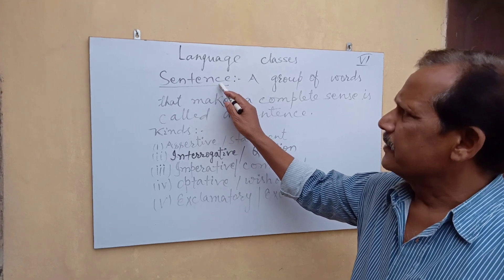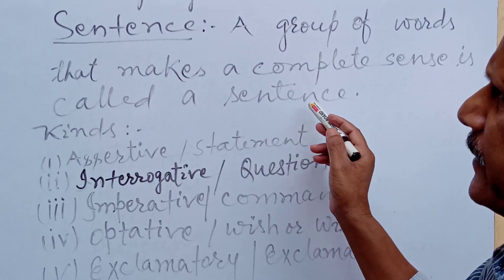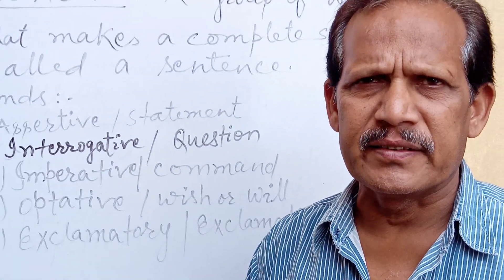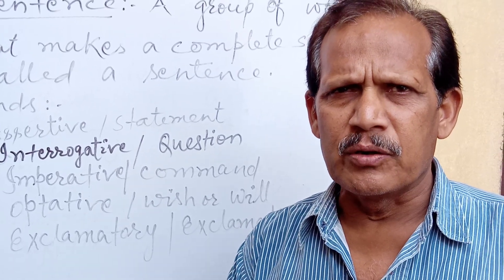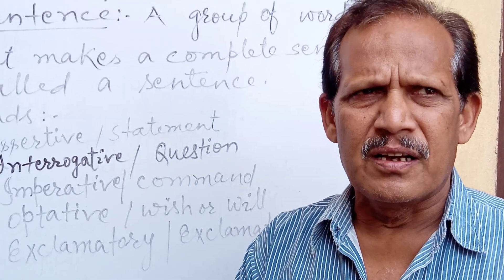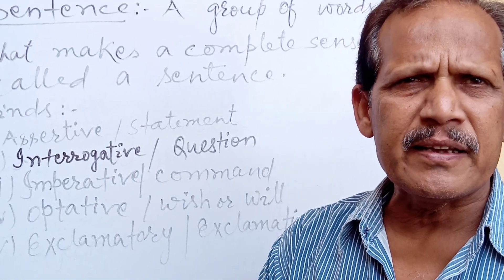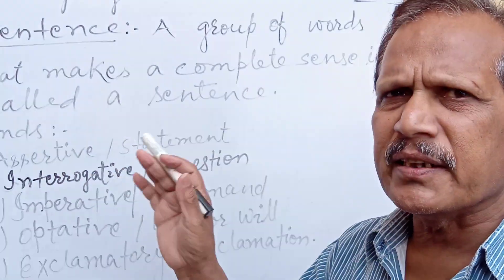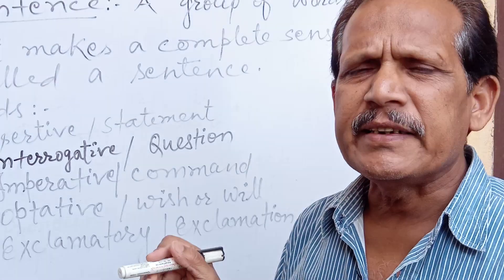A group of words that makes a complete sense is called a sentence. The words in the group must be arranged in a certain order. If you change the order of the words, it cannot make a complete sense. For example, 'Ram goes to Patna' — if you change the sequence to 'Ram to Patna goes', it cannot be called a sentence.